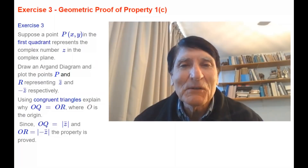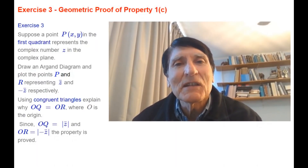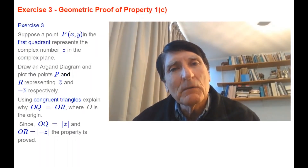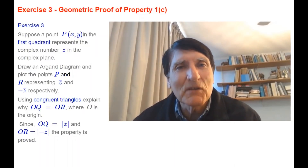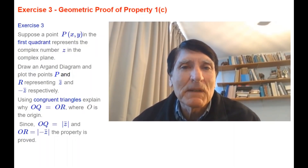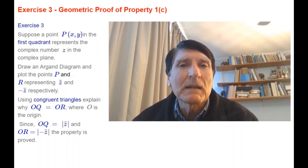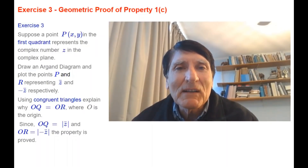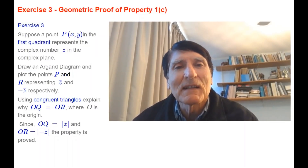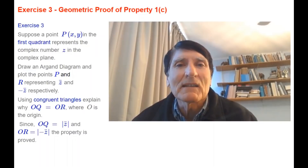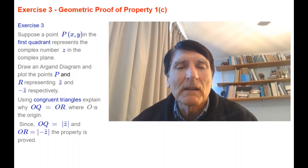Here's an exercise: prove property 1c using a geometric proof. Plot point p with coordinates (x, y) in the first quadrant representing z equals x plus iy. Then plot point q representing the conjugate of z, and point r representing minus the conjugate of z. Draw the triangles, show that the two triangles are congruent, and therefore oq equals or — representing the result that the modulus of the conjugate of z equals the modulus of minus the conjugate of z.